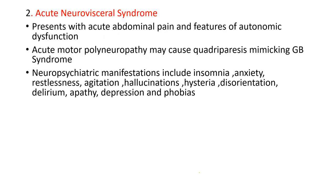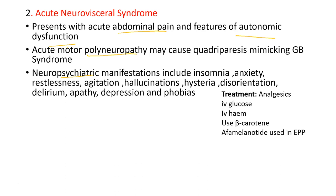Acute neurovisceral syndrome presents with abdominal pain, psychotic features, polyneuropathy, and features of autonomic dysfunction. There may be insomnia, anxiety, restlessness, agitation, phobias, depression, and apathy. It is treated by IV glucose and IV heme, because both of them inhibit the rate-controlling step which is delta-ALA synthase. Beta-carotene and afamelanotide can be used for prevention of cutaneous photosensitivity.